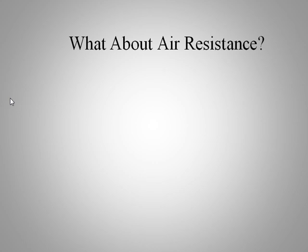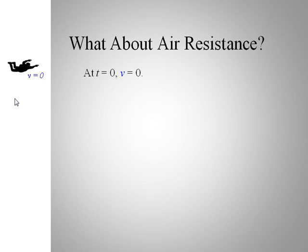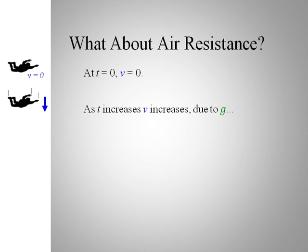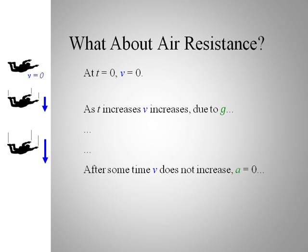Let's talk about air resistance. The previous examples didn't include it, but what if there is air resistance? Imagine a skydiver: at time zero they have zero velocity. They quickly start to accelerate due to gravity, getting faster and faster. But after some time, the velocity stops increasing — the acceleration goes to zero. That's because air resistance pushes back up, and when the air resistance force equals the gravitational force — the person's weight — the forces are balanced and velocity no longer increases.